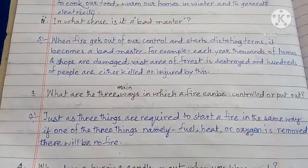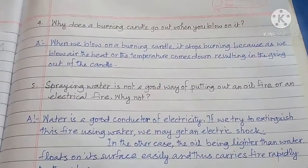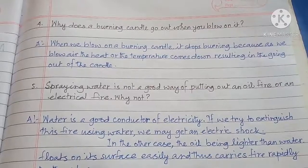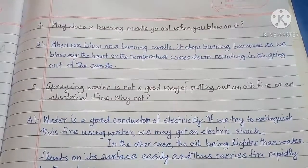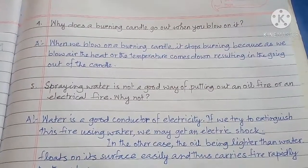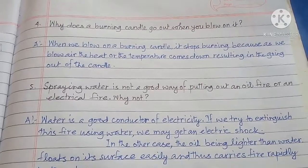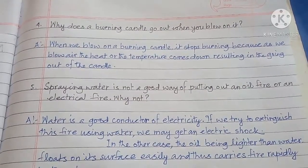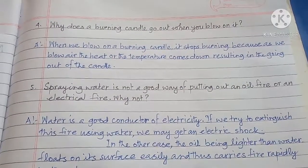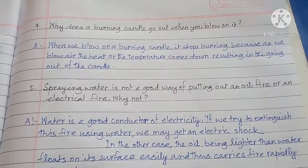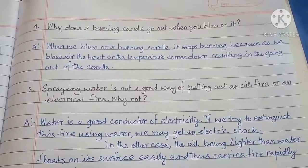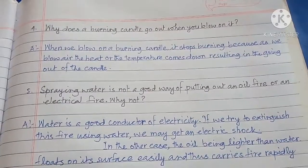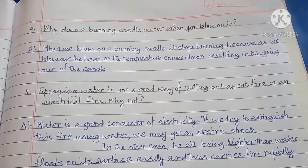Number four: Why does a burning candle go out when you blow on it? Answer: When we blow on a burning candle, it stops burning because as we blow air, the heat or the temperature comes down, resulting in the going out of the candle.